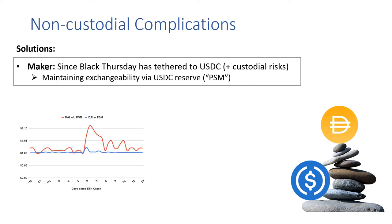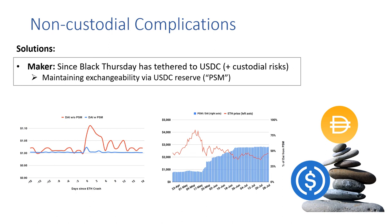This has largely worked as intended in the crisis this past May — we can see comparing the Black Thursday crisis in red to the May crisis in blue that the peg is now maintained much more tightly. However, it comes at a cost: recently over 50% of the DAI supply has become backed solely by USDC, meaning there are correspondingly very large custodial risks in DAI.